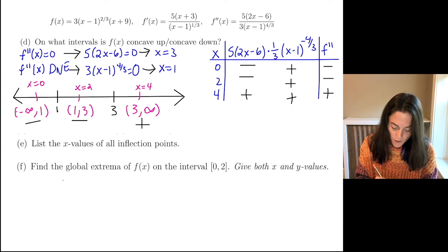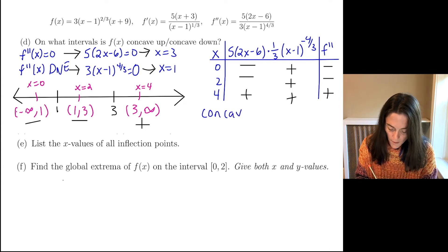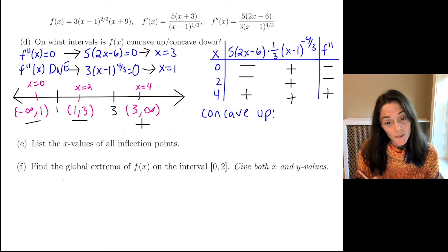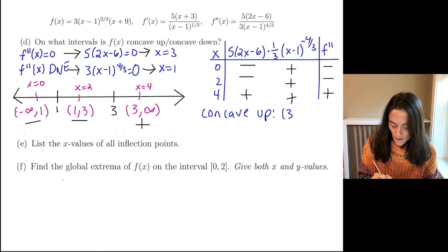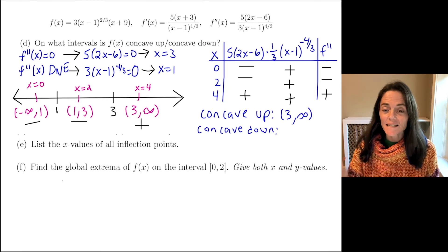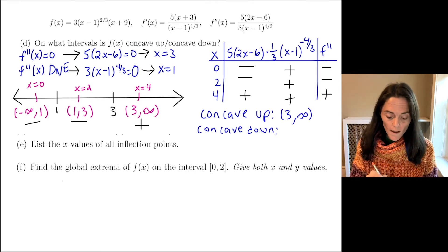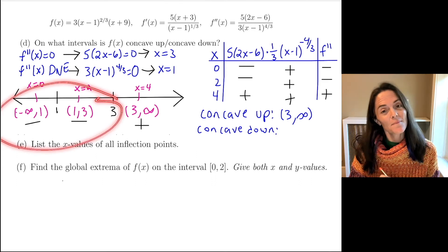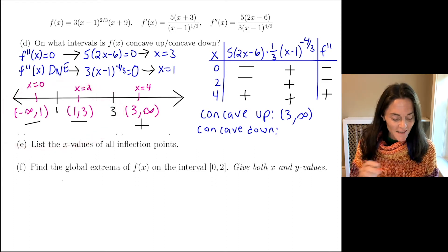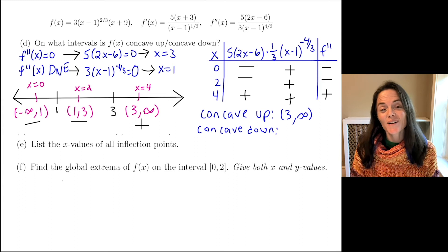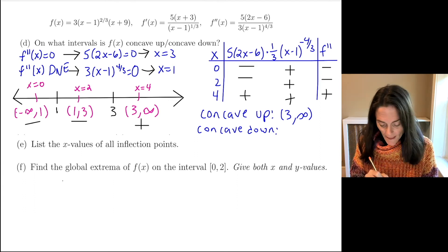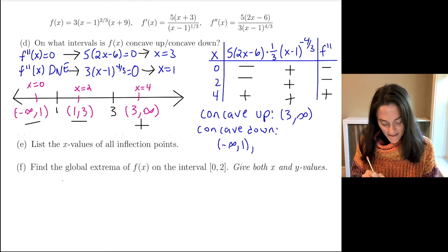Now I can make my final conclusion. It's concave up everywhere I see a plus, which is 3 to infinity. The function is concave down everywhere we see a minus — the easiest way to leave our answer is to list the two intervals with a comma in between: minus infinity to 1 and 1 to 3. So this is the answer for letter D.